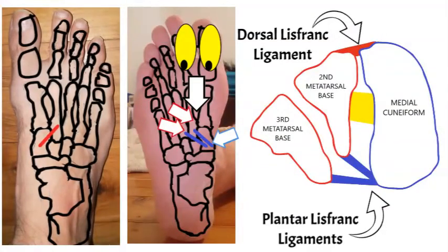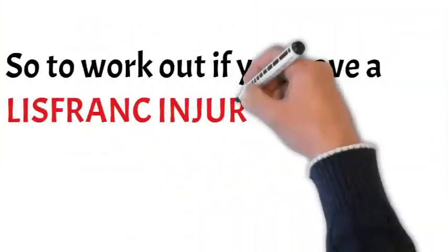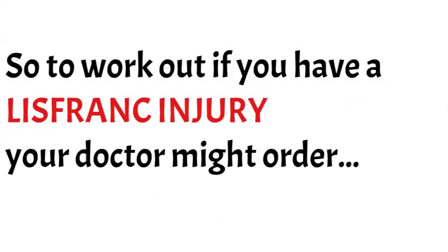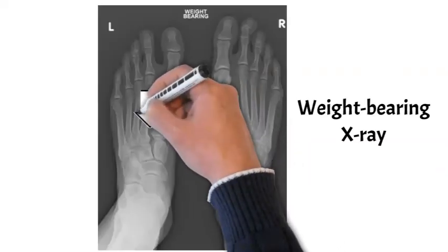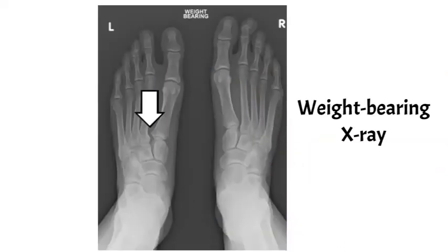So if you have that what we call ligamentous type, your x-ray and CT scan will be normal. So what you might find is to work out if you've had a Lisfranc injury, your doctor might do a few things. First of all, they'll probably order something called a weight-bearing x-ray where you're actually putting weight through your foot, and they might compare it to the other side. And what they're looking at is to see if the space on the side that's affected is greater than the side that's not affected. And you can see that in that drawing, the space on the left is wider.